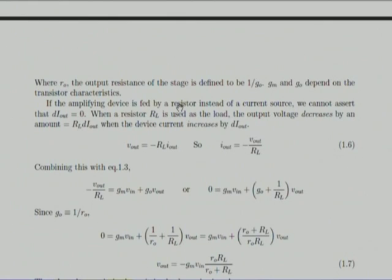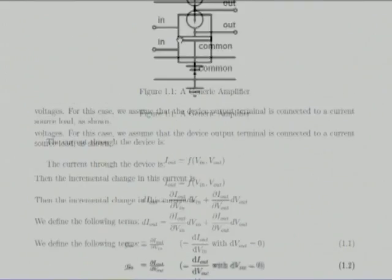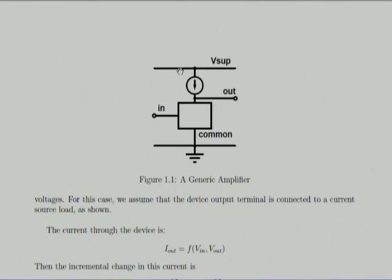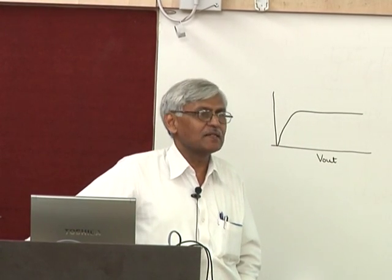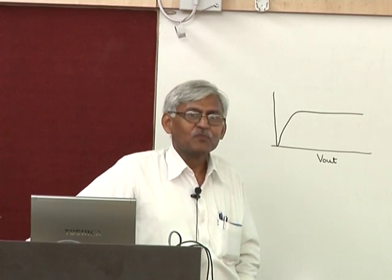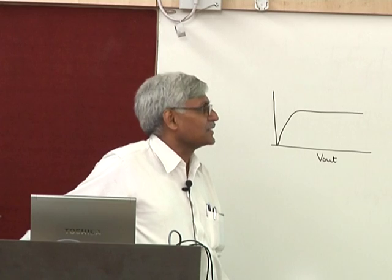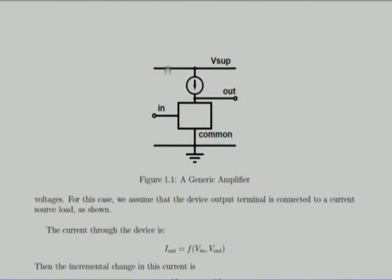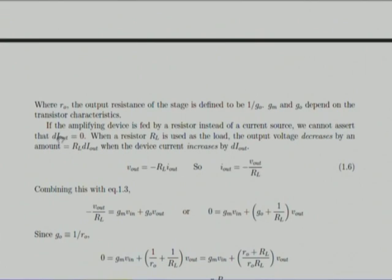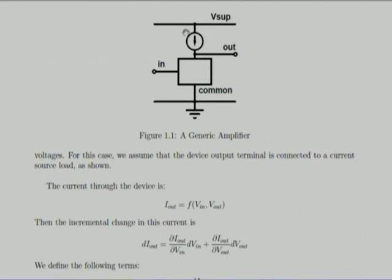Suppose I do not have a current source — you go to Leamington Road and ask for a transistor and they have one, but they do not have a current source. So let us put a resistor here instead and see what happens — can I still make an amplifier? If I put a resistor, then unlike before where d(i_output) was 0, now if the voltage changes the current through the load will change. So I cannot put d(i) equal to 0.